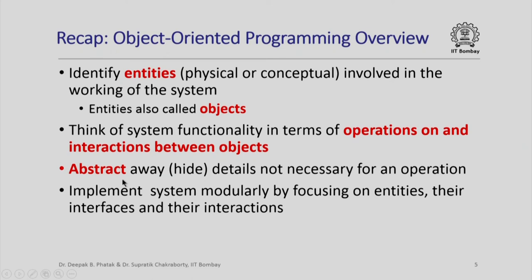Recall from a few lectures back where we had seen a quick overview of object oriented programming. We had seen that when you are trying to write a program for a complex system, it is perhaps best to first identify entities — which could be physical or conceptual — that are involved in the working of the system. These entities are also called objects, and then we could think of the overall functionality in terms of operations on these objects and interactions between them.